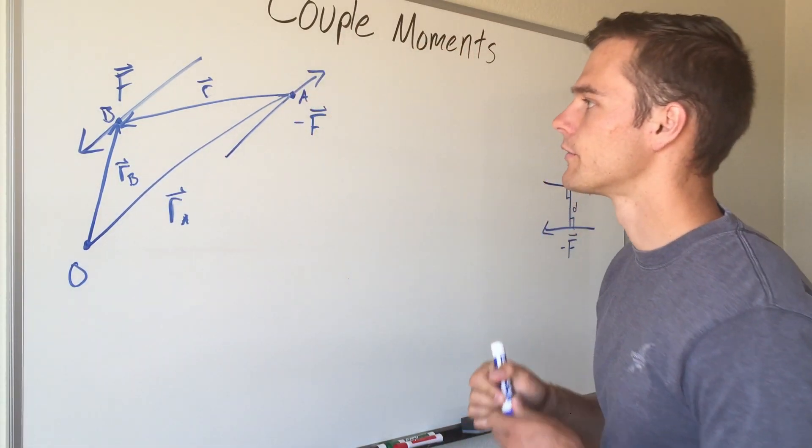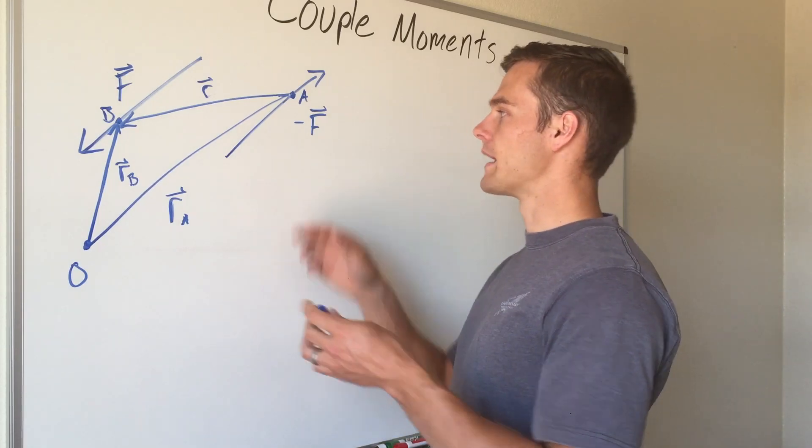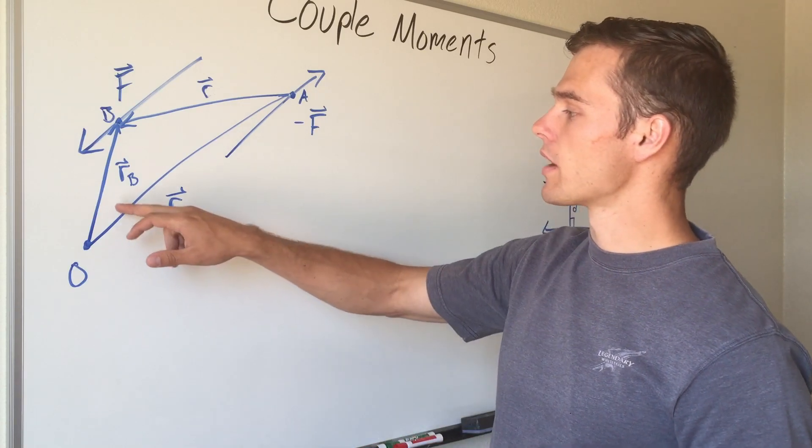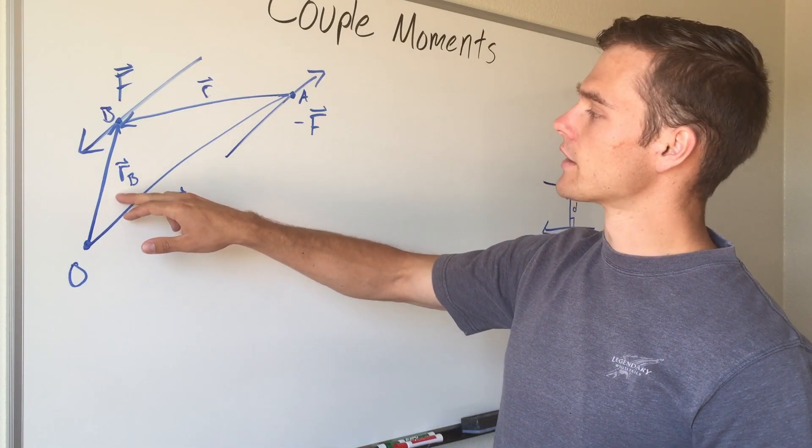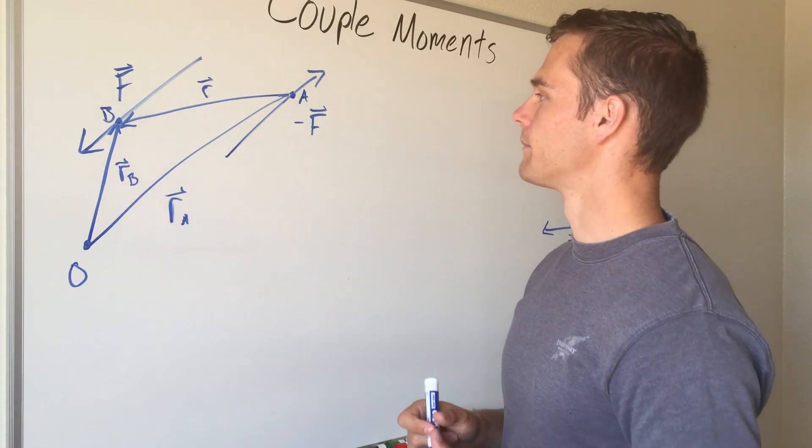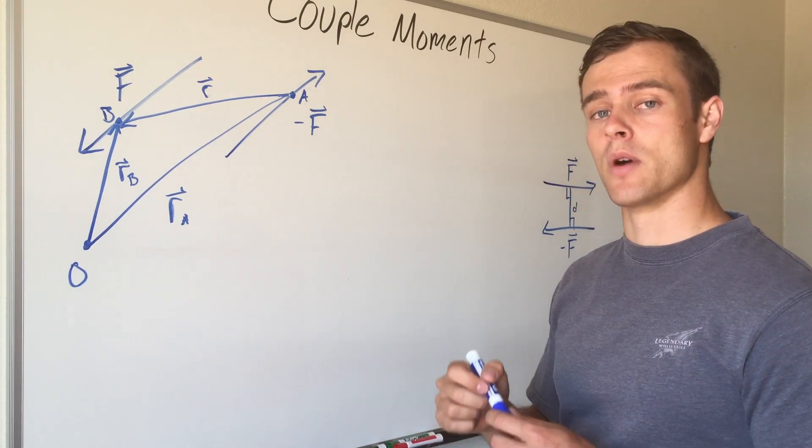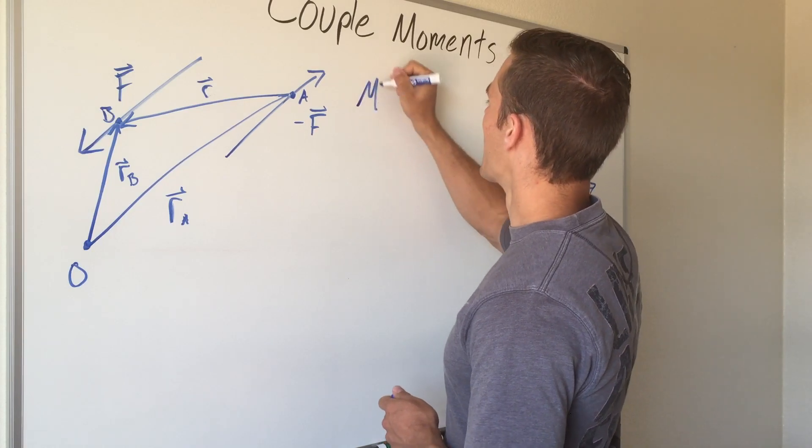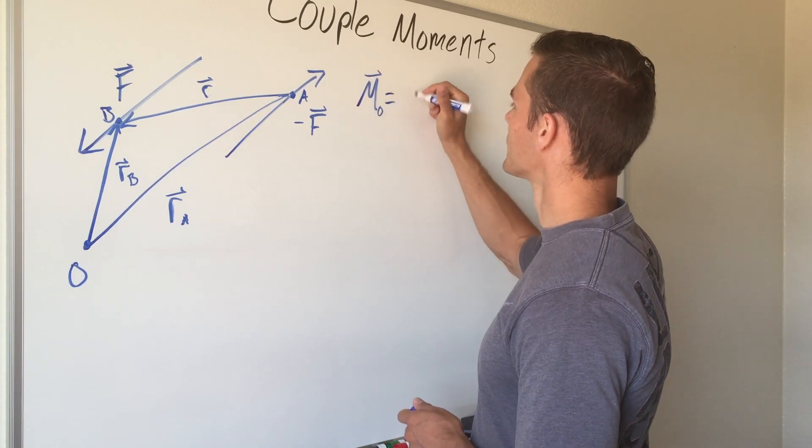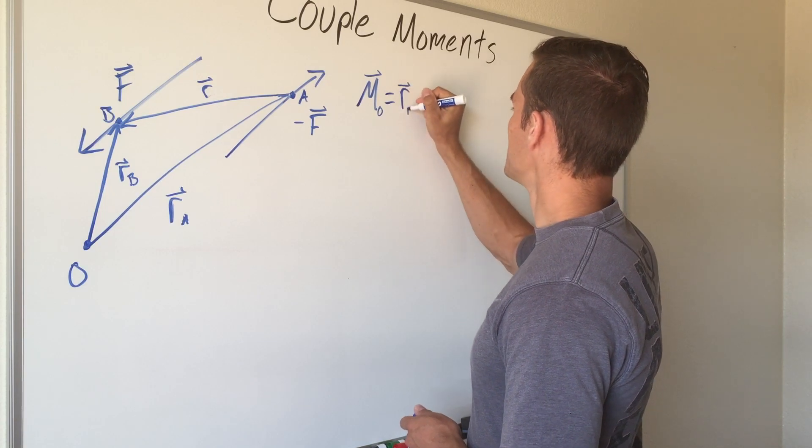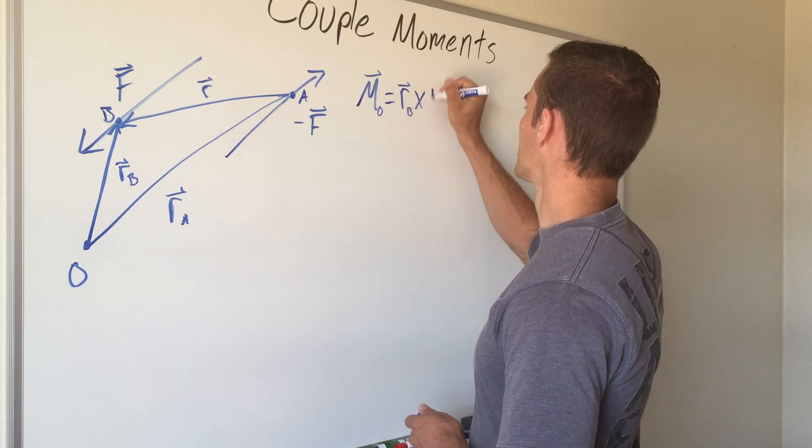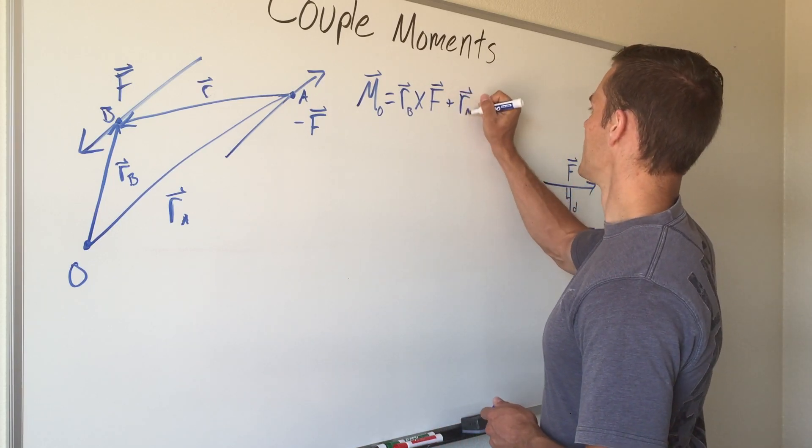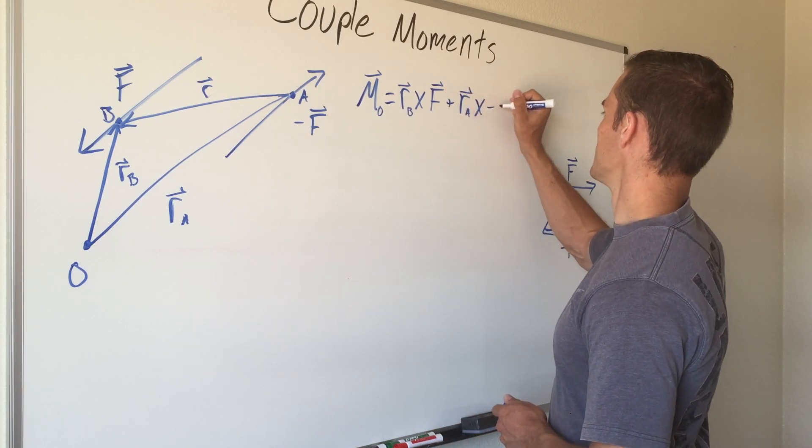If we're wanting to find the moment created by these two forces at point O using regular moments, we take the cross product of the position vector and our force vector and we'd add those two up. That would look like our moment about point O equals r sub B cross F plus r sub A cross negative F.